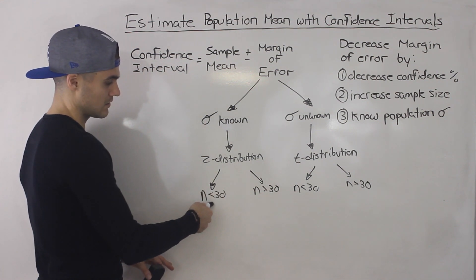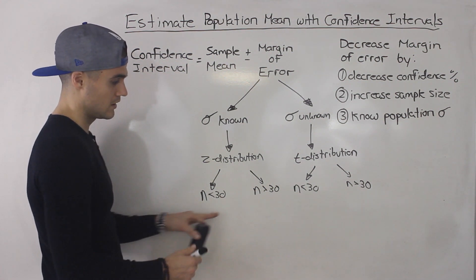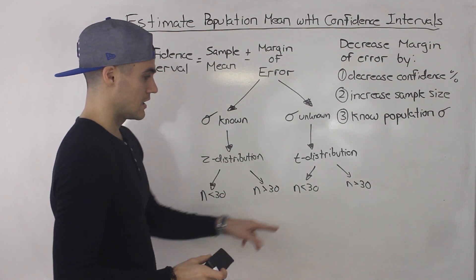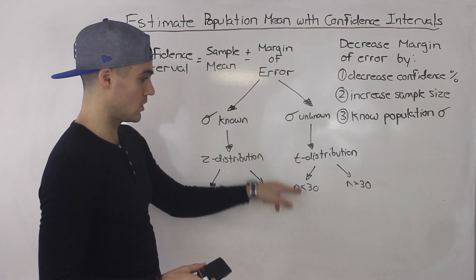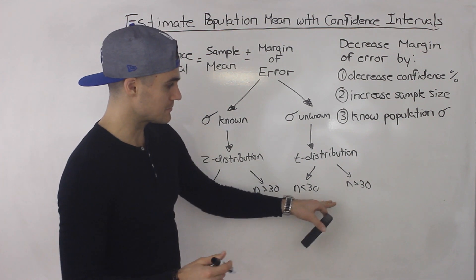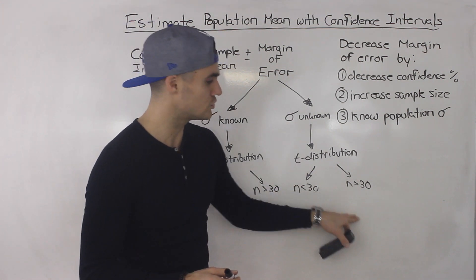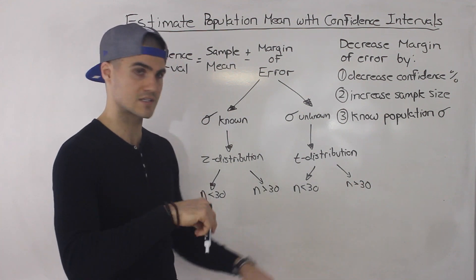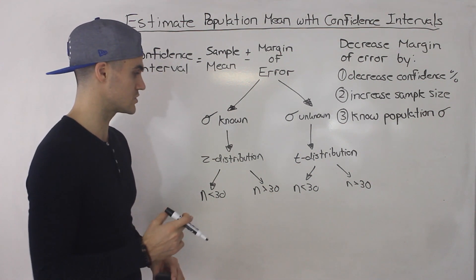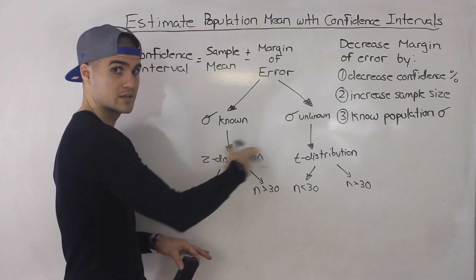If the standard deviation is known and the sample size is less than 30, some courses say to use the T distribution because the sample size is small. If it's greater than 30 and you know the population standard deviation, you can use the Z distribution. If the standard deviation is unknown and the sample is less than 30, you always use the T distribution. If the sample is greater than 30 but the standard deviation is still unknown, sometimes you can use either Z or T — it may be your choice depending on your professor, textbook, or course.